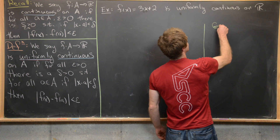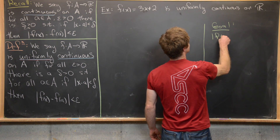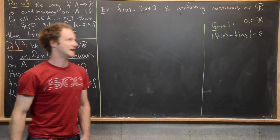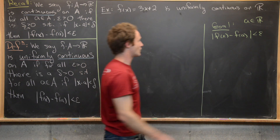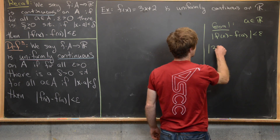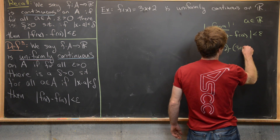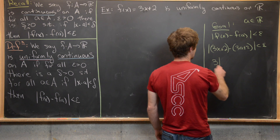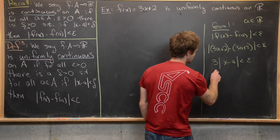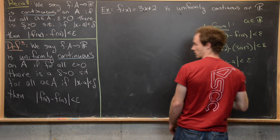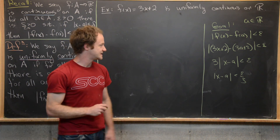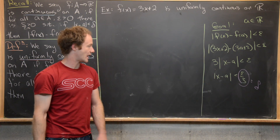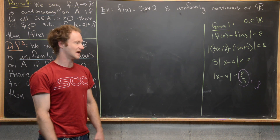For the scratch work, we start with our goal inequality: |f(x) - f(a)| < epsilon, keeping in mind that a is some arbitrary real number. Inserting our function gives |3x + 2 - (3a + 2)| < epsilon. That simplifies to 3|x - a| < epsilon, which means |x - a| must be less than epsilon over three. We see that this choice of delta doesn't have an a in it anywhere, so we can choose a delta which only depends on epsilon and not on a.